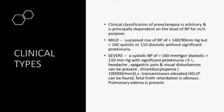The clinical classification of preeclampsia is arbitrary and principally dependent on the level of blood pressure for management purposes, categorized as mild and severe. In mild type: sustained rise of blood pressure more than 140/90 mmHg but less than 160 systolic or 110 diastolic, without significant proteinuria. In severe type: systolic BP more than 160 mmHg or diastolic more than 110 mmHg with significant proteinuria of more than 3 plus.